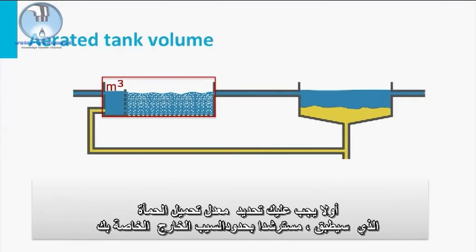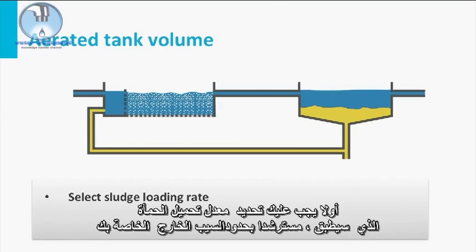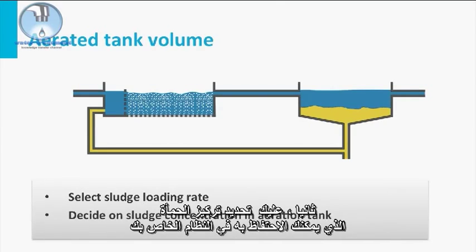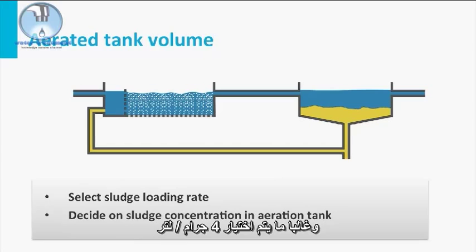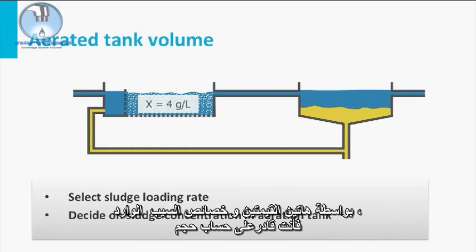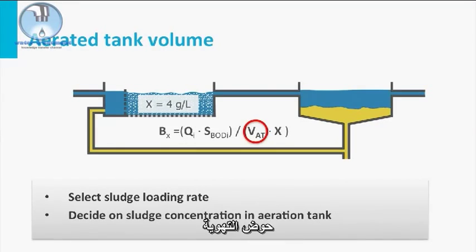First, you should select the sludge loading rate to apply, guided by your effluent demands. Secondly, you decide upon a sludge concentration you can maintain in your system — often 4 grams per liter is chosen. With these two values and given influent characteristics, you are able to calculate the volume of the aeration tank.